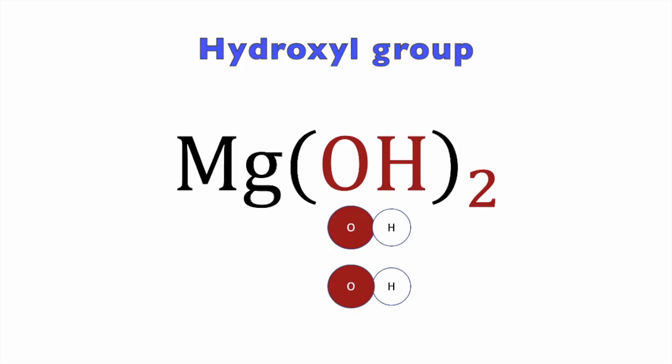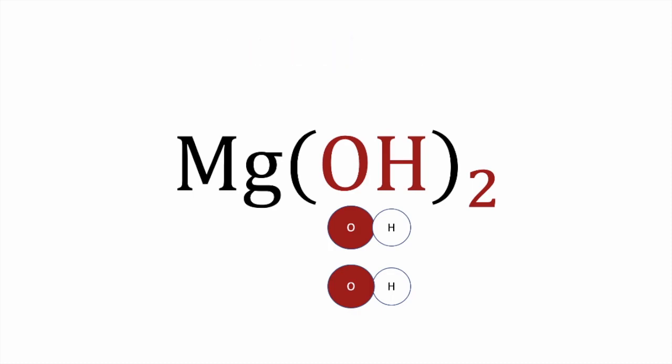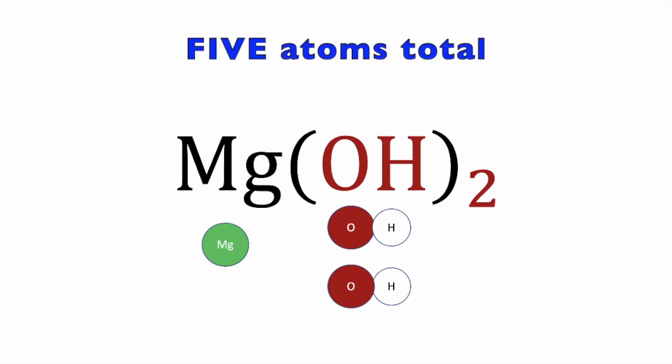Each of the hydroxyl groups has two atoms in it. So if we have two of these groups, it means we have four atoms total from both groups together. Adding all of our atoms — one magnesium plus two hydroxyl groups — we get five atoms total.